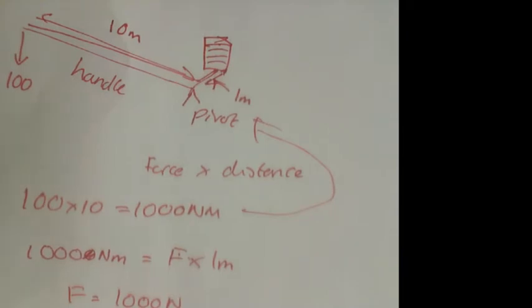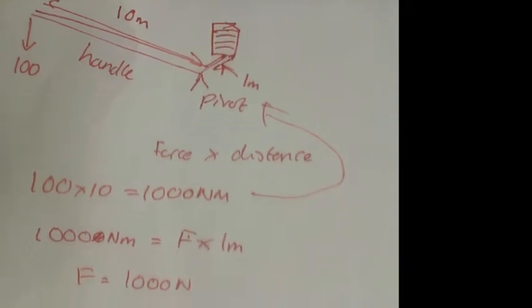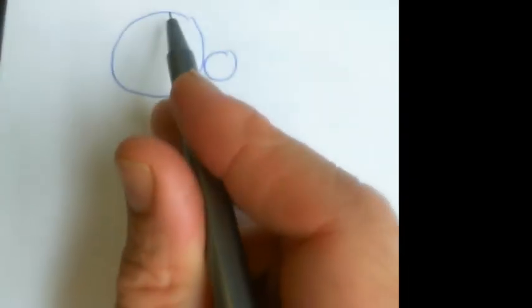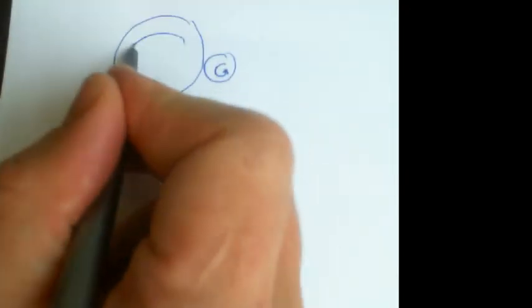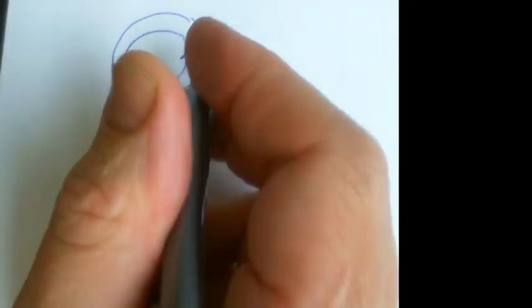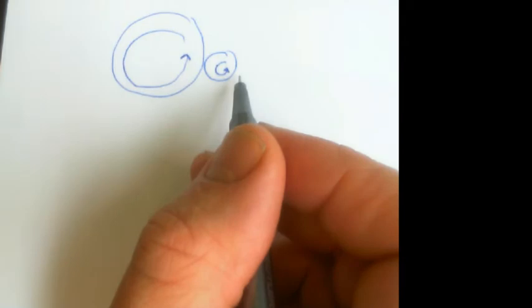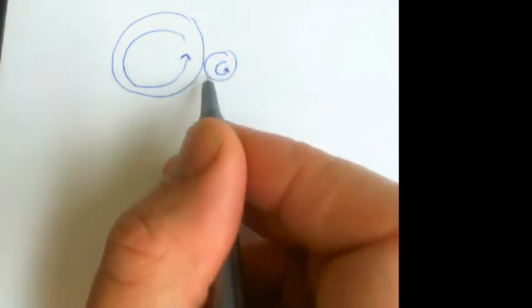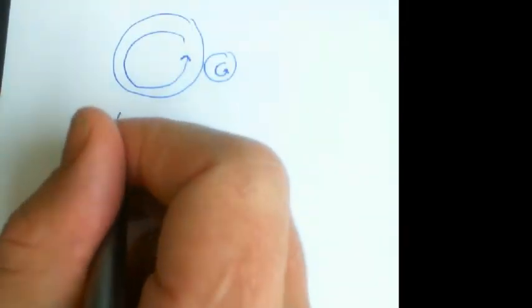Next: gears. Gears do the same thing, but instead of multiplying the force, they multiply the speed. If you imagine you've got a big cog and a little cog, when the big cog is turning, they both have to travel at the same speed at the point of contact, but the smaller cog has got to cover a distance like that. So if this one is 10 times bigger than this one, then this one will go around 10 times.